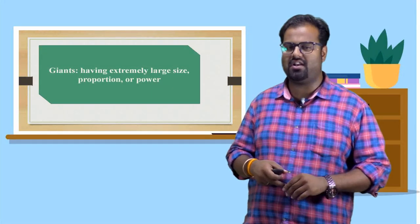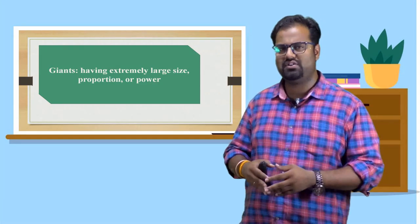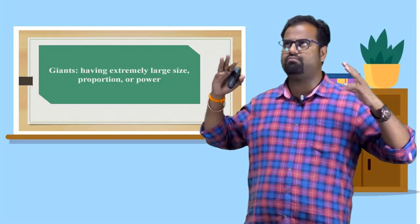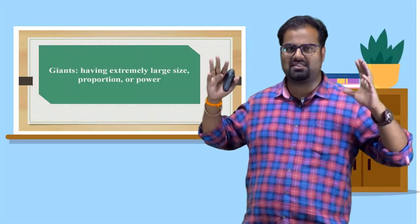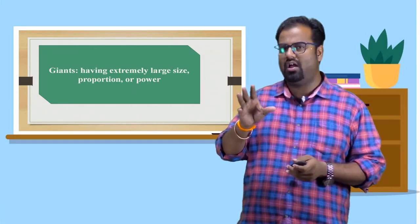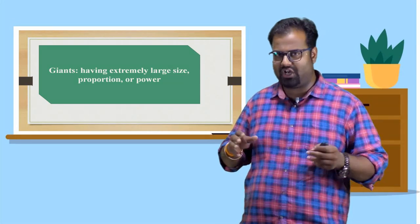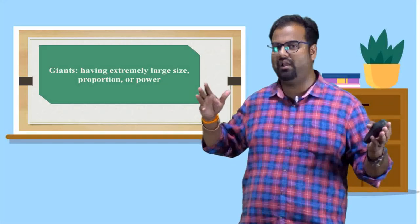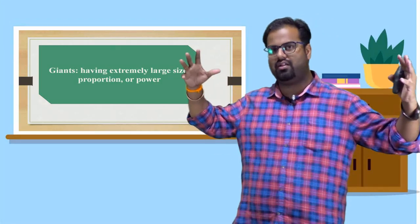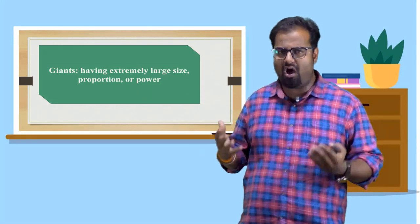The next one is giants. Having extremely large size proportion of power. Giants means very large, like a monster, very huge, very something you cannot imagine. The size of a particular object or a creature. You might have heard some fairy stories, some stories narrated by your grandmother. There was once upon a time, there was a giant, there was a monster, there is a devil. So, devils, how do you imagine, are they very tiny like ants? No, they are very big. Their body size is so big and tall. They are very large kind of creatures.